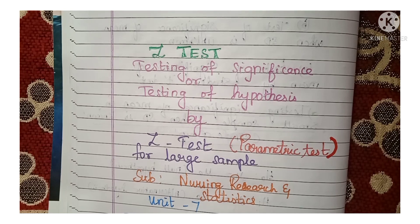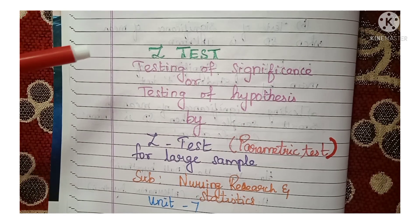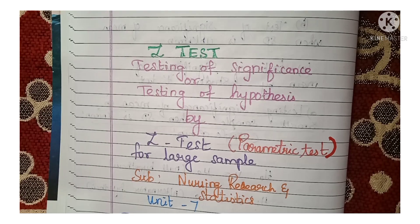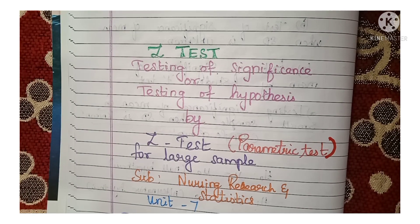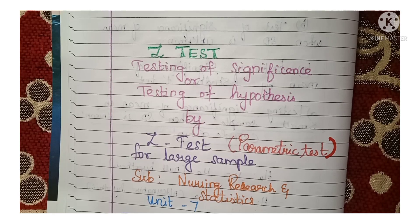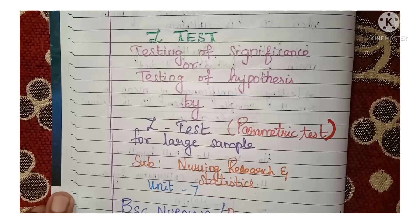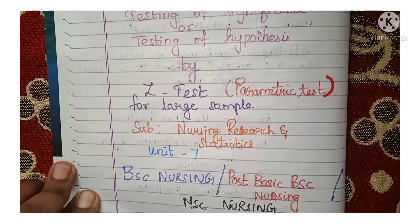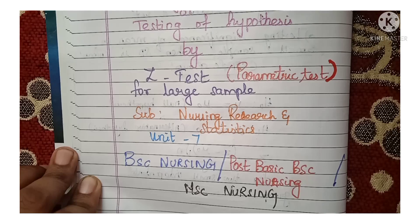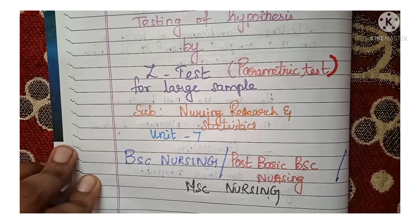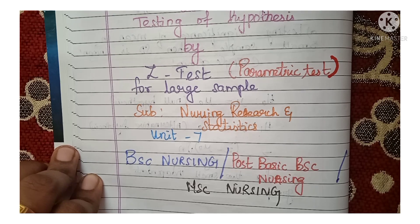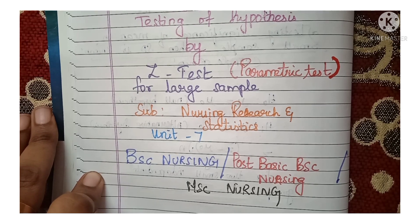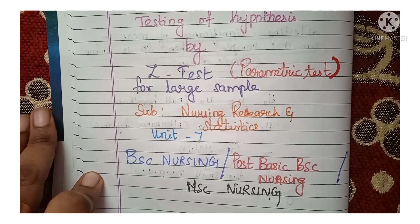Welcome to Science Easy Tech channel. In this video we are going to discuss about the Z-test. The Z-test is used for testing of significance or testing of hypothesis, and it comes under parametric tests. This test is mostly used for large samples, that is when n is more than 30. This topic comes under Unit 7 in the subject Nursing Research and Statistics for BSc Nursing students. This video is also useful for Post Basic BSc Nursing and MSc Nursing students. If you are new to the channel, please subscribe and press the notification bell icon to get the latest updates.